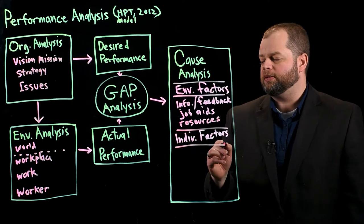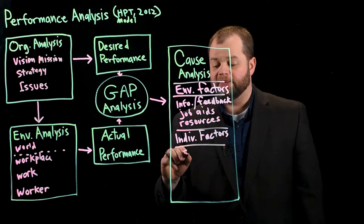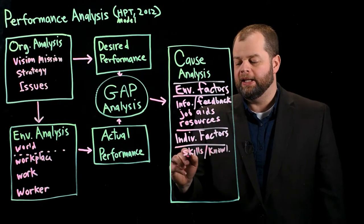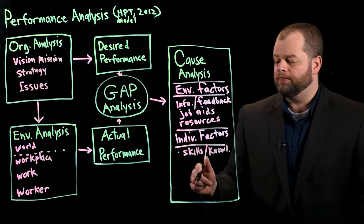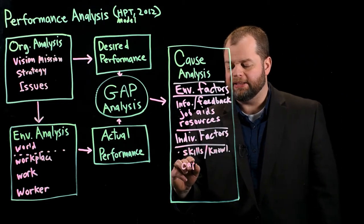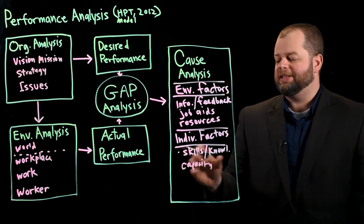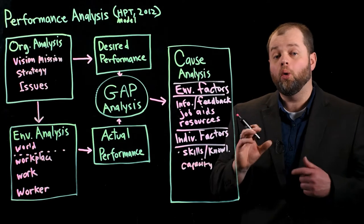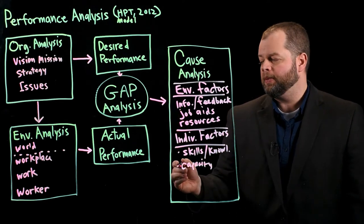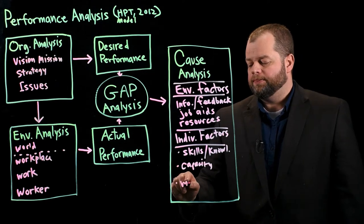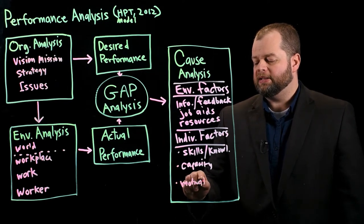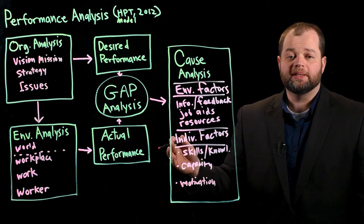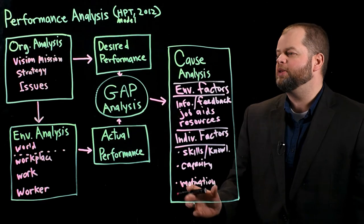And then of course there's the individual factors. And these can include things like just having the skills or the knowledge that they need to be able to perform. If somebody doesn't have the skills or knowledge they can't perform. Another thing to consider is capacity. If that individual does not have the capacity to perform, then maybe they need to be moved to another position or they need to actually be moved on to another organization. And then the last thing is motivation. There has to be some level of motivation for that individual to work for whatever those rewards are or to work because it's intrinsically valuable to them. So this is the cause analysis.